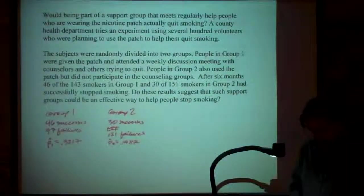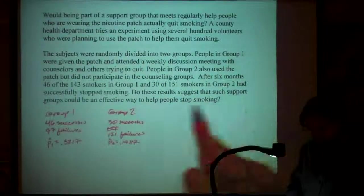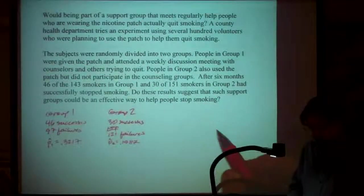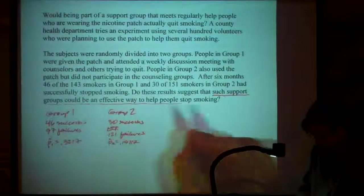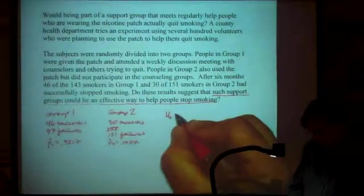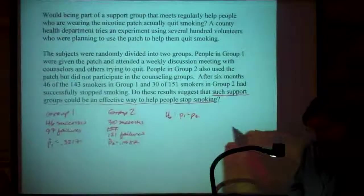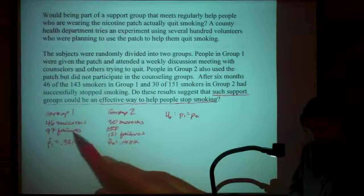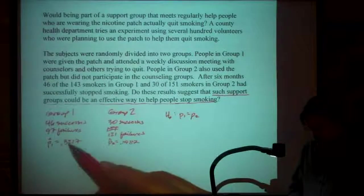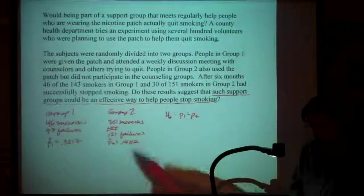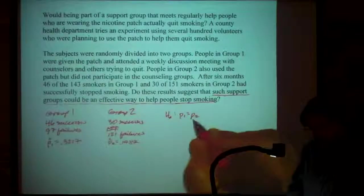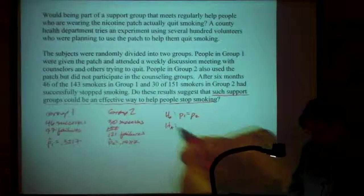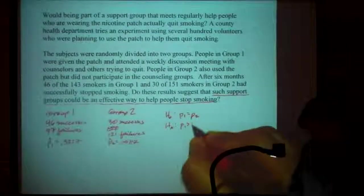All right, so it says, do these results suggest that such support groups could be an effective way to help people stop smoking? Do they suggest that? Remember, whenever you see a question phrase like this, that means this thing here is your alternative hypothesis. So the null hypothesis is going to be that P1 equals P2. P1 being the proportion of people who get the counseling who are able to quit smoking. And P2 is the proportion of people who don't get the counseling who are able to quit smoking. And so what null hypothesis says is the counseling doesn't help. Counseling doesn't do anything at all that those are exactly the same proportion. And the alternative hypothesis says, no, P1 is actually greater than P2.